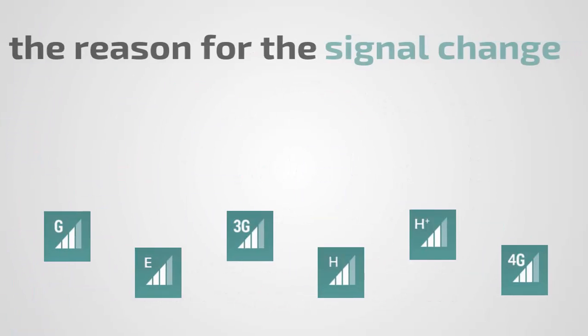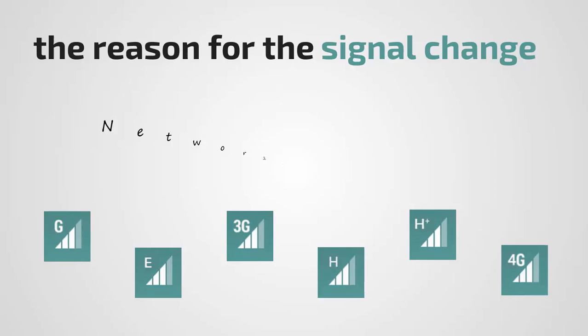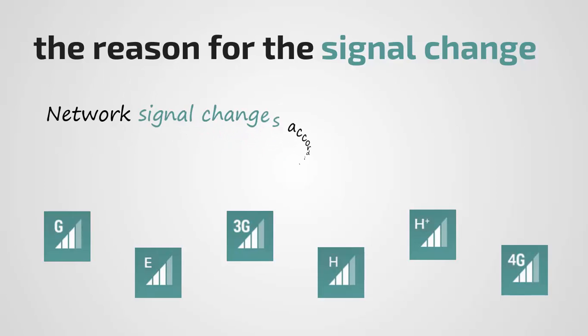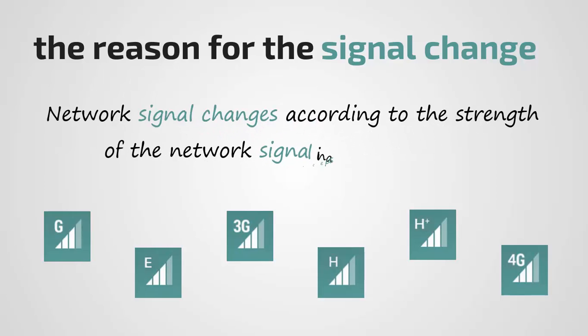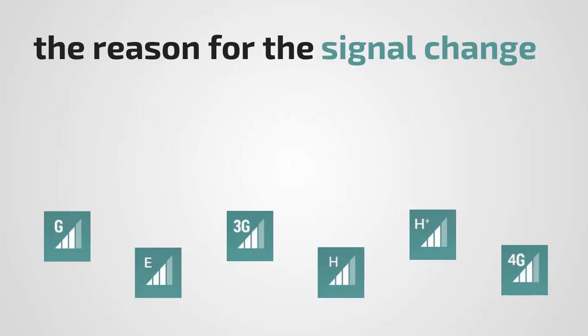The reason for the signal change: Network signal changes according to the strength of the network signal in a specific area.